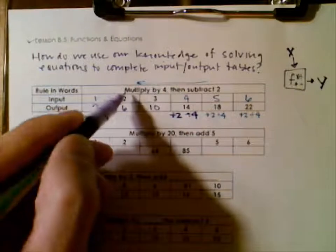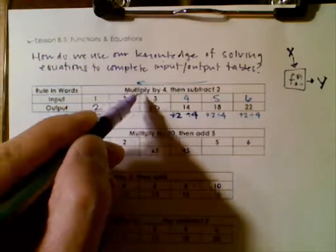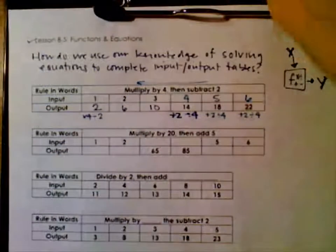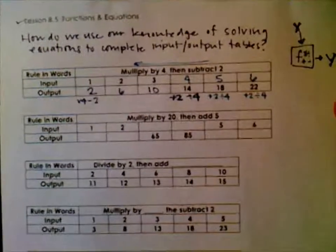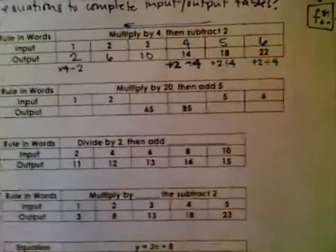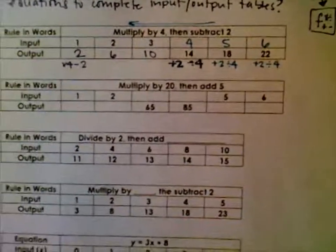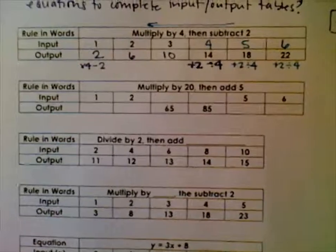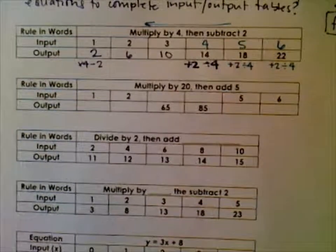So when we're working with the input, we go regular — whatever the rule says. When we start working backwards from the output, we flip things around and go the opposite direction.